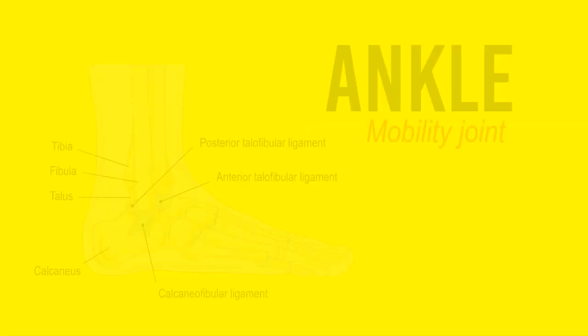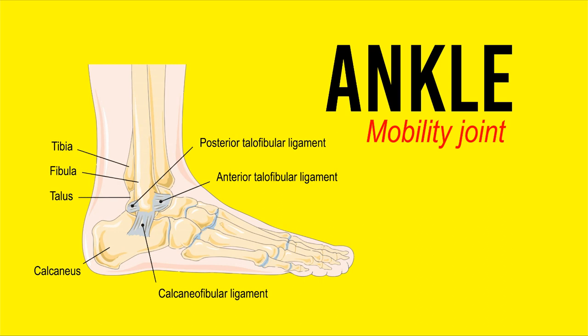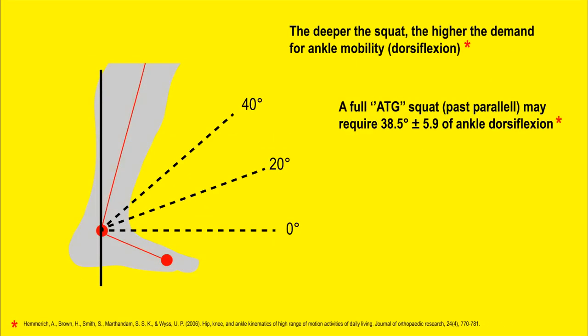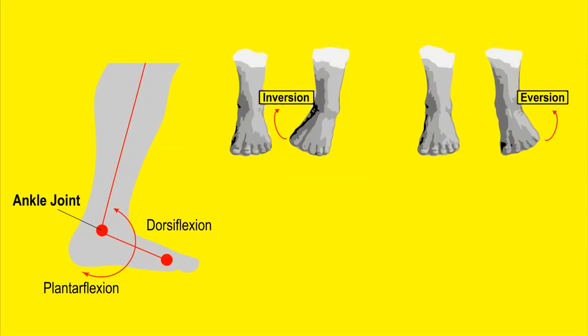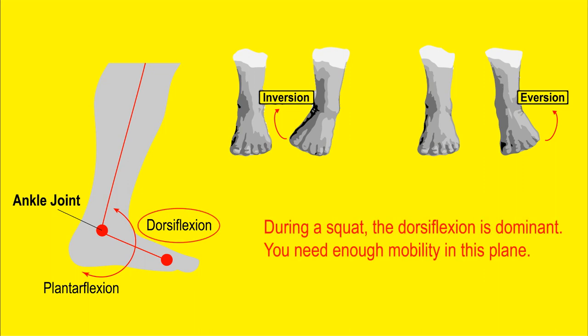Let's go through all of the structures involved in a squat. Starting with the ankle: the ankle is one of the mobility joints involved in the squat. When you squat, the ankle will obviously flex — the deeper you go, the higher the flexion. The ankle is capable of flexing in four different ways: plantar flexion, dorsiflexion, inversion, and eversion. During a squat, dorsiflexion will be dominant, so you need to have enough mobility in this plane.